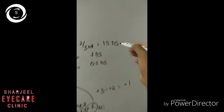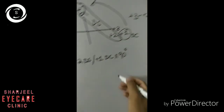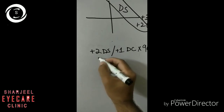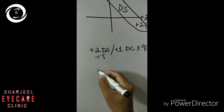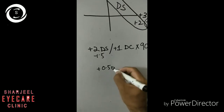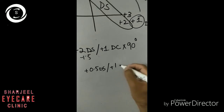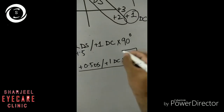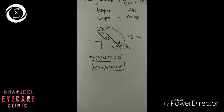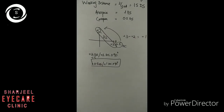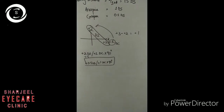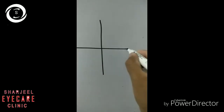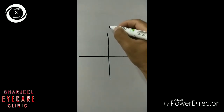As we haven't subtracted the working distance yet, my working distance is 1.5 diopter sphere, so you subtract it from the spherical component — not from the cylindrical component, but from the sphere. So our final number will be plus 0.5 diopter sphere and plus 1 diopter cylinder at 90 degrees. That's how you calculate the number from the retinoscopy readings.